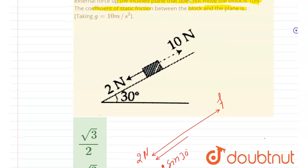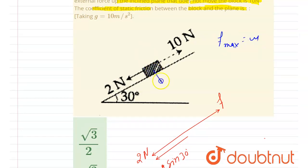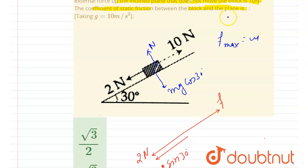We can calculate the maximum friction force using μN. Here N can be calculated by writing the force equation perpendicular to the plane. Since mg cos 30° balances N, I write N = mg cos 30°.